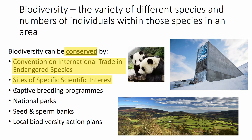Then there are captive breeding programs, which you might have heard of in some zoos. Up in Scotland they recently had a baby panda born. Breeding programs run in various zoos across the world, focusing on different species — usually endangered species — to try to get them breeding again even if they're not in the wild.